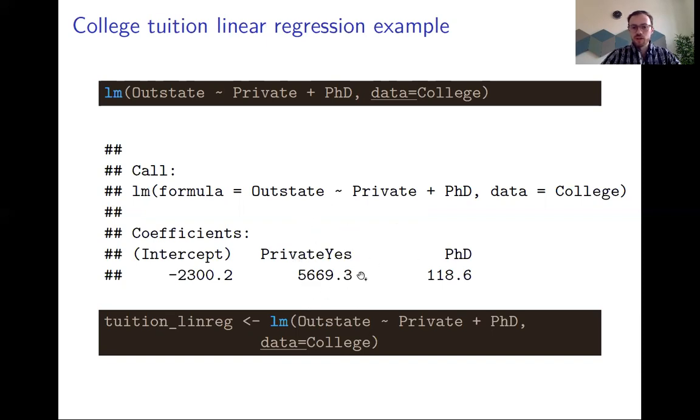The PhD coefficient is just the value of having one percent extra faculty with a PhD, which will cost you 118 dollars extra.